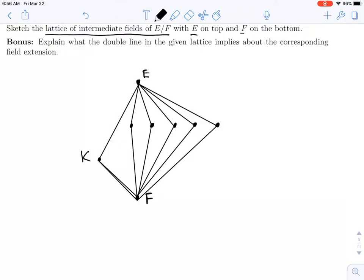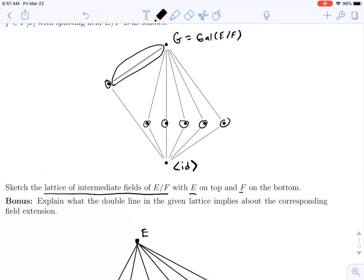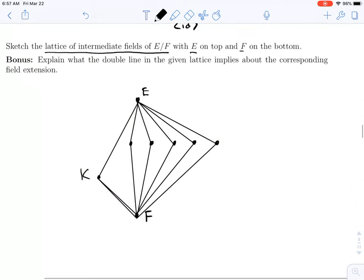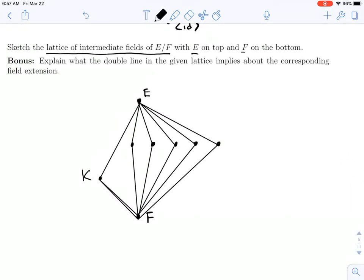So let's say we gave a name to that field extension, K over F. In the subgroup lattice, a double line would tell you, say I called this N, that N is a normal subgroup of G. In the field extension language, this would say that K over F is a normal extension. So that's what we're looking for there.